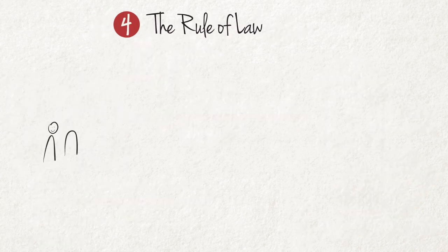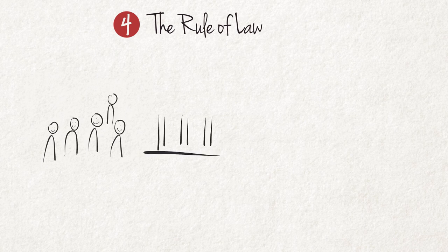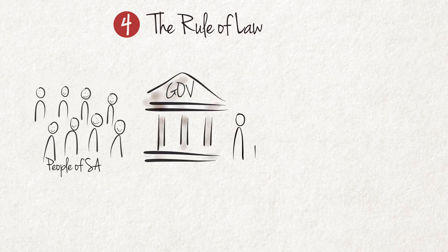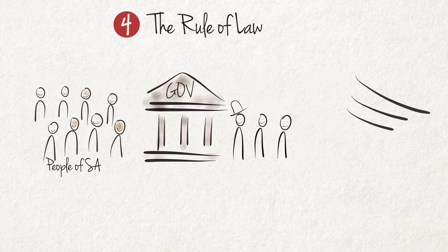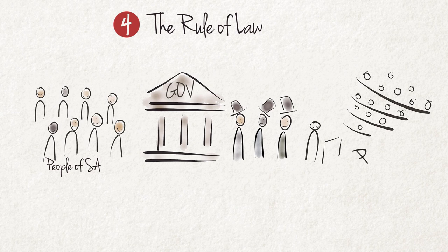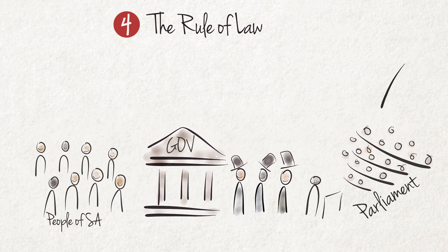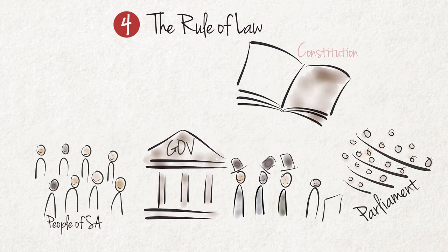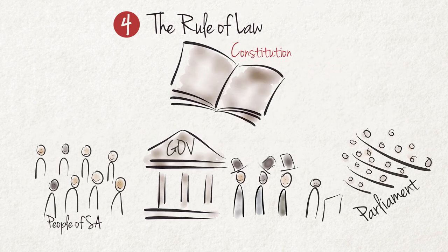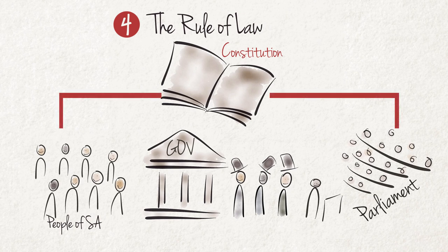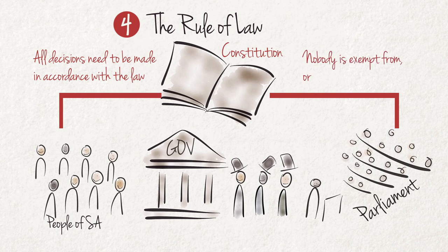Key feature number 4 is respect for the rule of law. The rule of law refers to the principle that public officials can only exercise power and make decisions if authorized to do so by law. They are not allowed to act arbitrarily or with an ulterior purpose. They must act in terms of laws that are clear, publicized, stable and evenly applied. The process by which laws are enacted, administered and enforced must be transparent, fair and efficient. It also means that all decisions need to be made in accordance with the law. In short, nobody is exempt from or above the law.